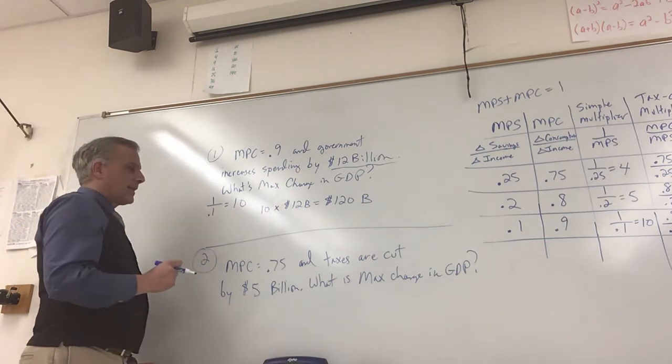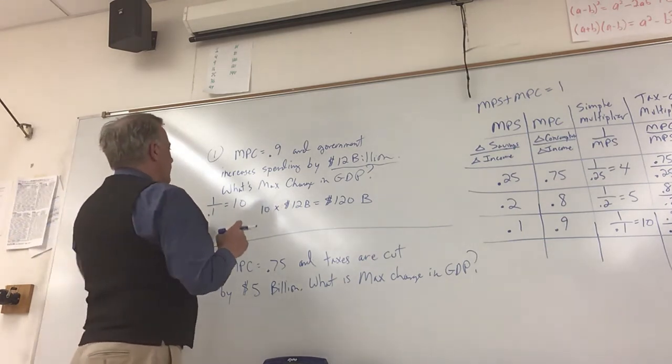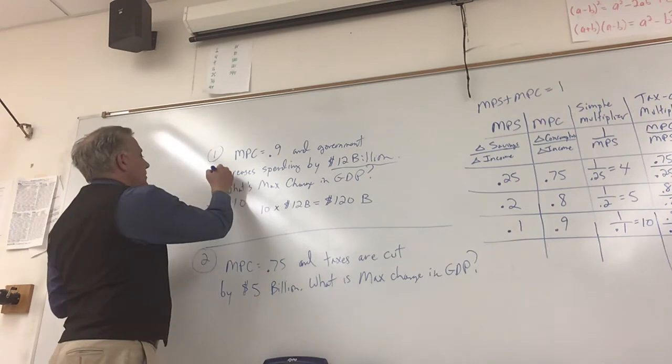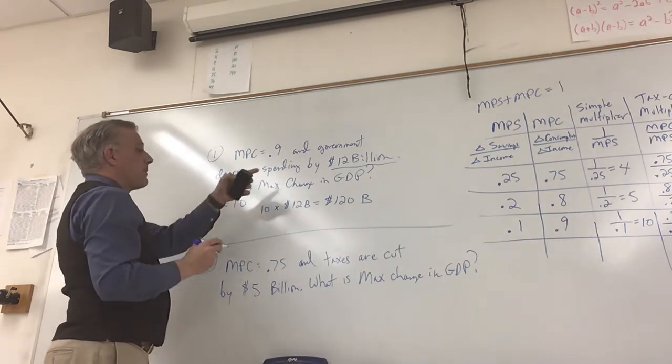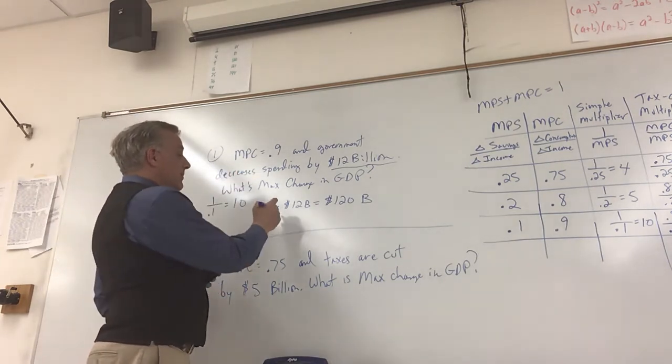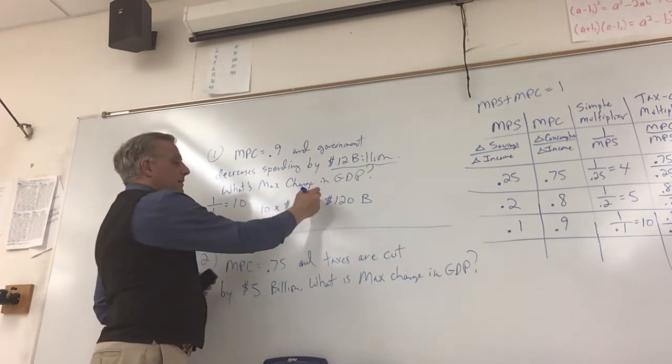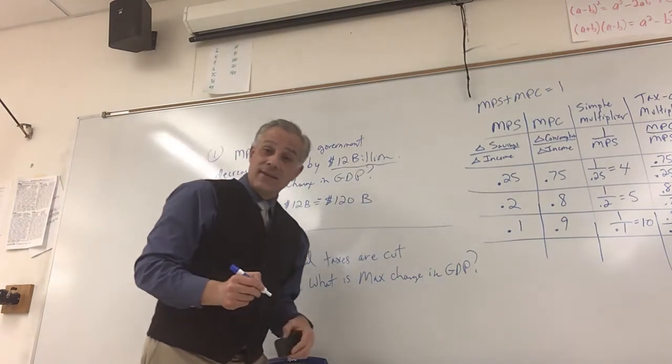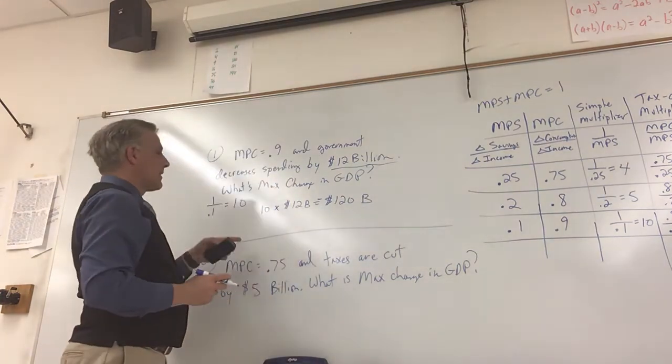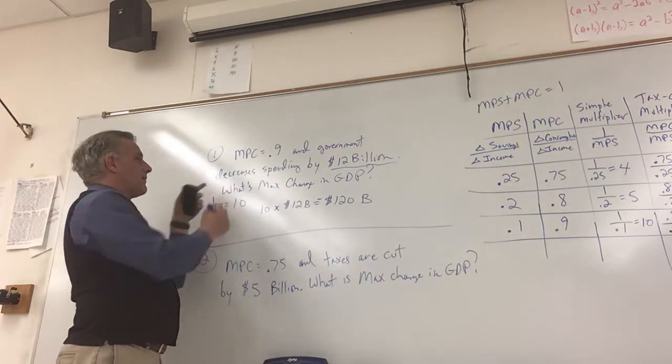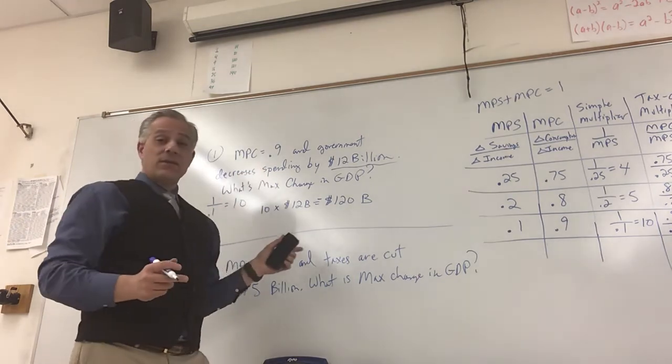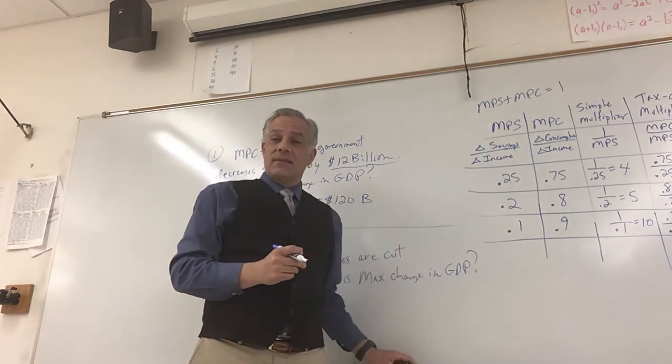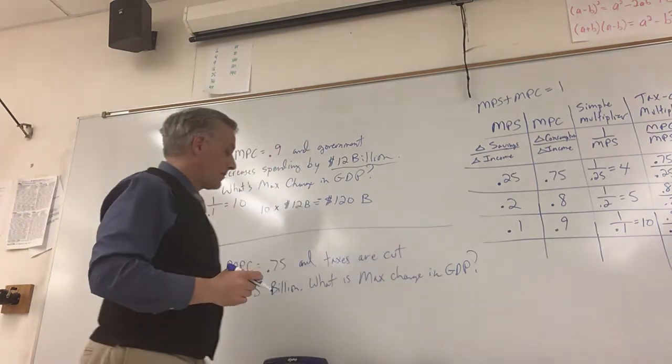All right, let's take a look at a tax cut multiplier. Oh, let me just quickly, if I change this to if it decreases spending by 12 billion dollars, then this would have a negative impact of negative 120 billion dollars. Thank goodness that doesn't happen either. So if this decreases spending, so know your increases and decreases. Pay attention to that.